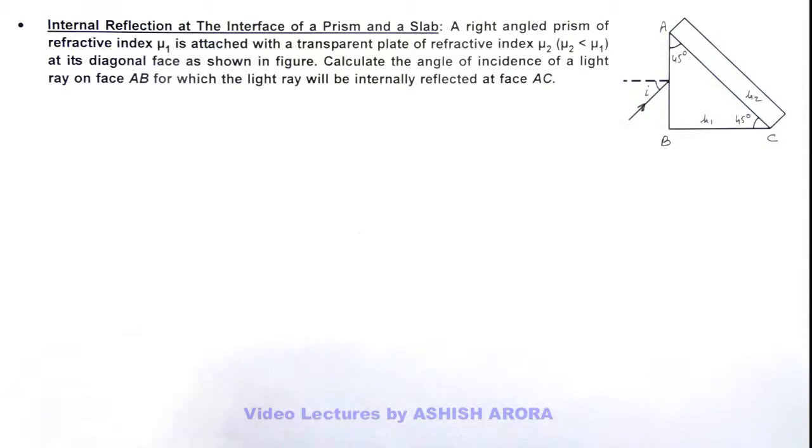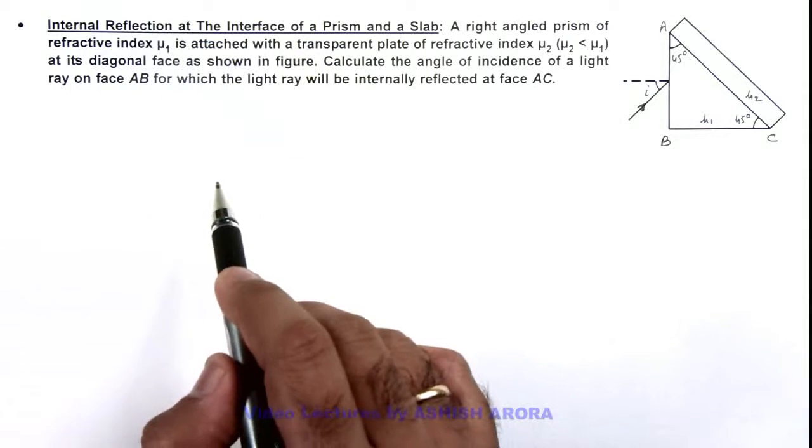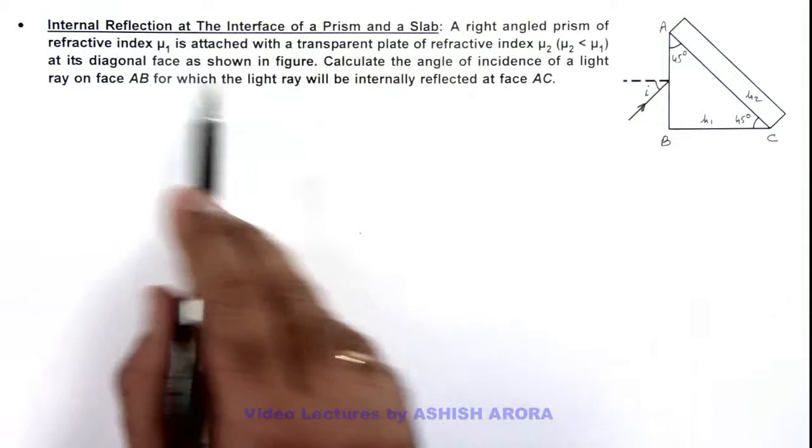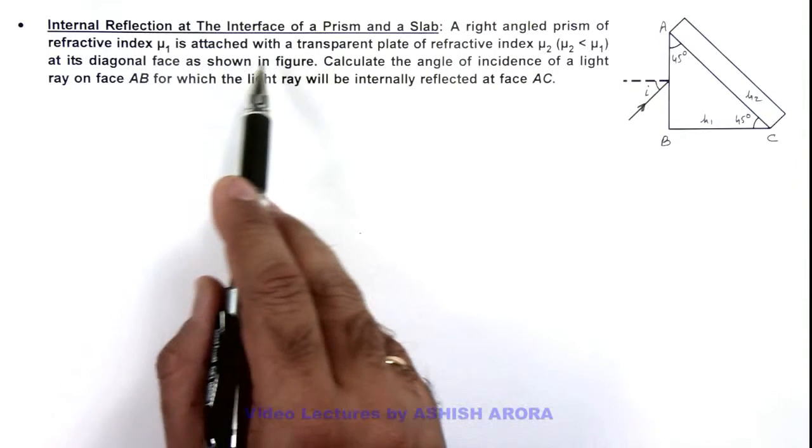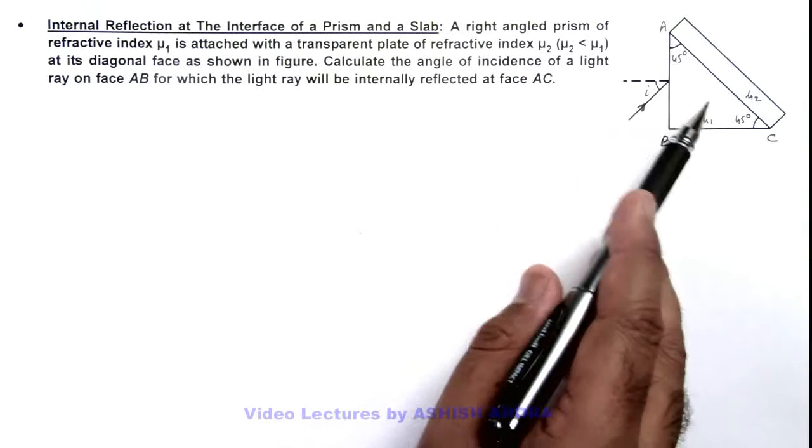In this illustration, we'll demonstrate the internal reflection at the interface of a prism and a slab. Here we are given that a right-angle prism of refractive index μ₁ is attached with a transparent plate of refractive index μ₂, as we can see here in the figure.